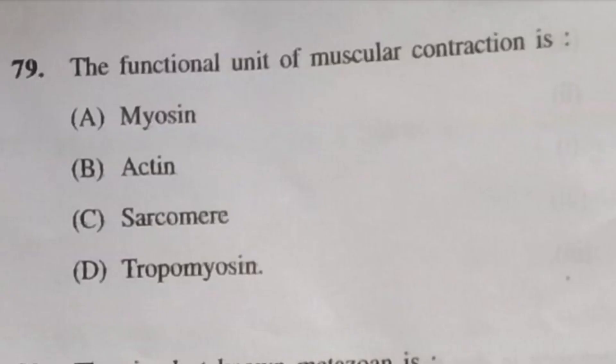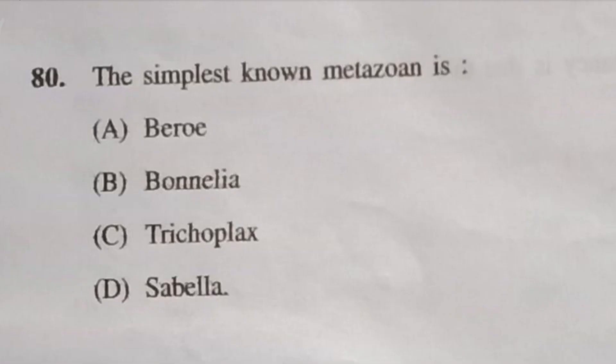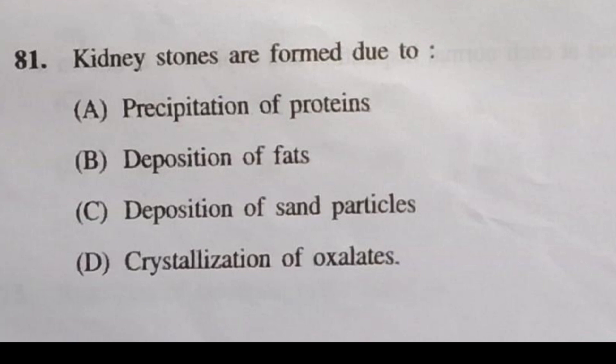Question 79: The functional unit of muscular contraction is — C, sarcomere. Question 80: The simplest known metazoan is Trichoplax. Question 81: Kidney stones are formed due to — answer will be D, crystallization of oxalates.